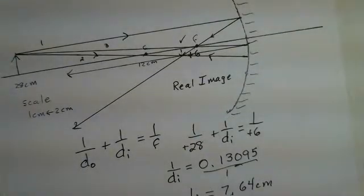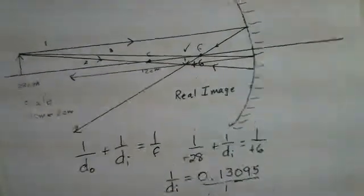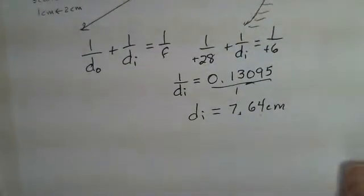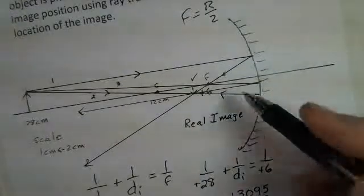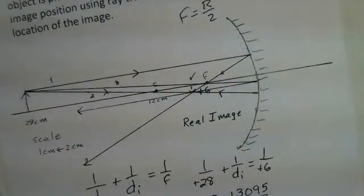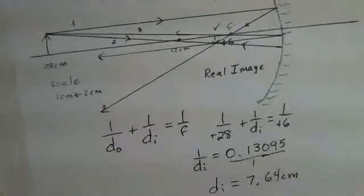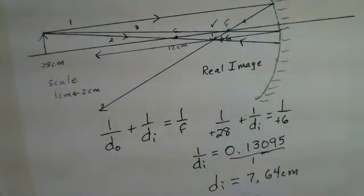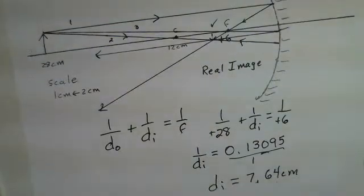We could do magnification, minus DI divided by DO. But you've done that before, so I'm not going to put that in this video. But ray tracing, use two of the three possible rules, locate the image, then do the calculation. The best result comes from the calculation. Your ray tracing is always going to be a little bit inaccurate. But the more you practice, the better your ray tracings will be.